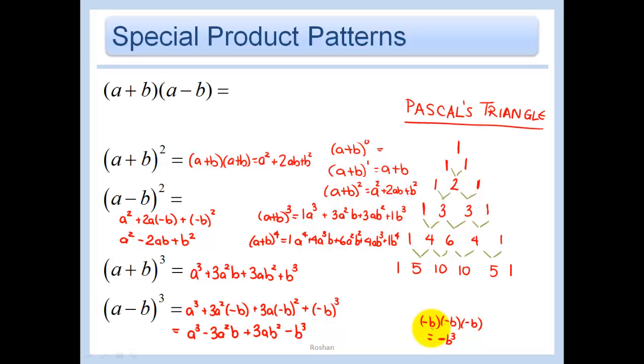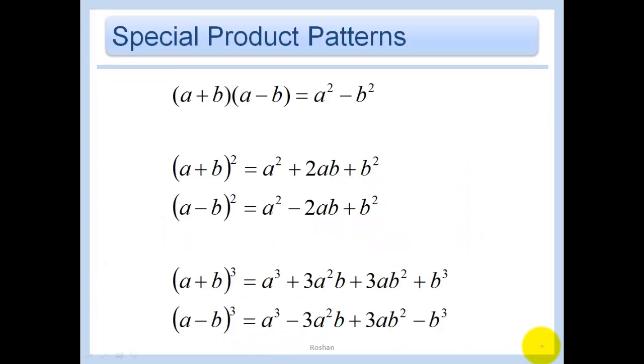All right. And you might realize here that the signs, if it's a minus 1, alternate. So it's plus, minus, plus. On this one, it's plus, minus, plus, minus. And that always happens, too. And the reason is, well, we just kind of proved it. And so here I just have all of your special formulas listed here.